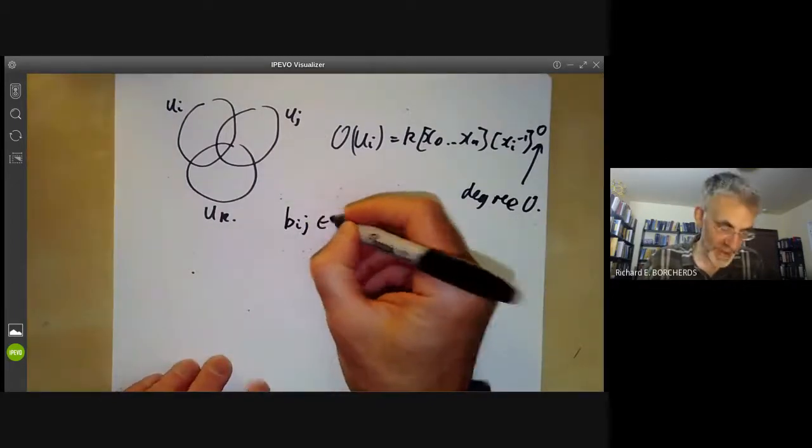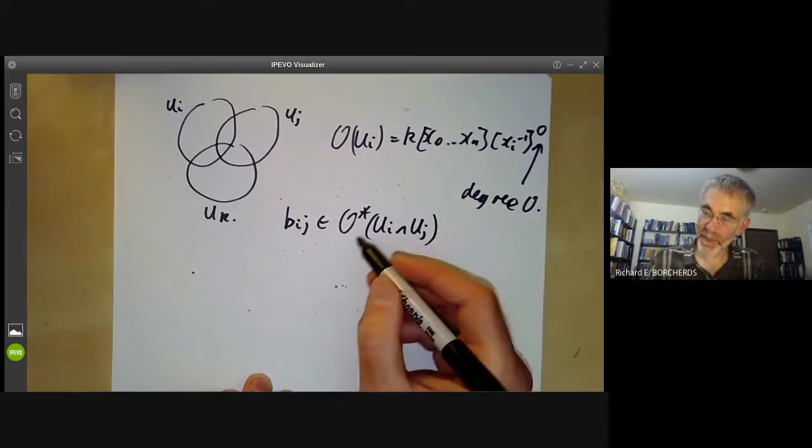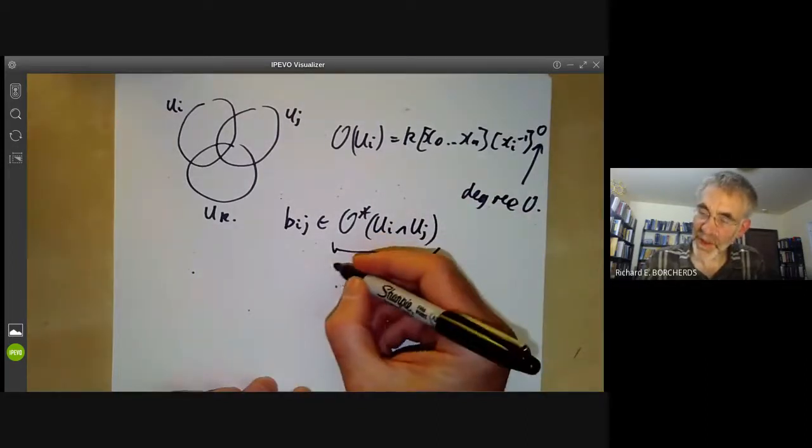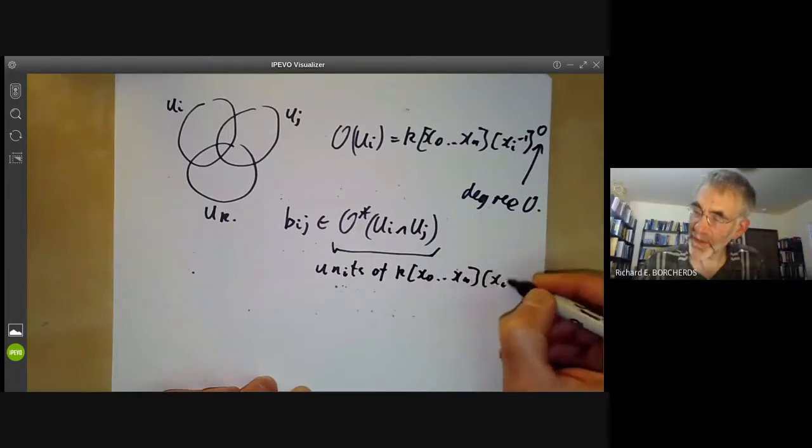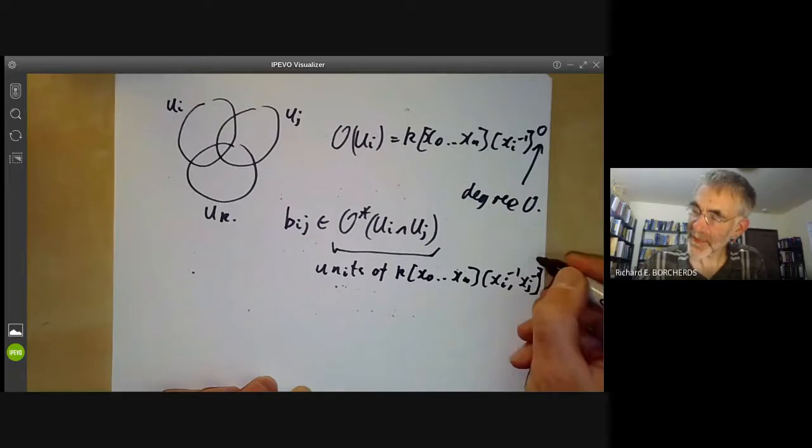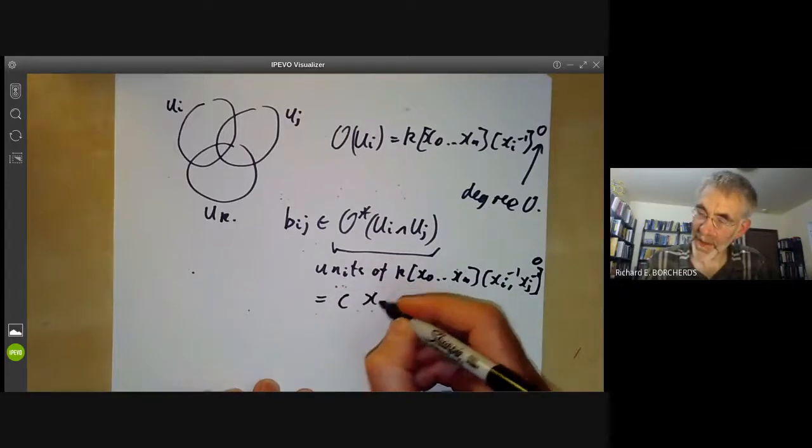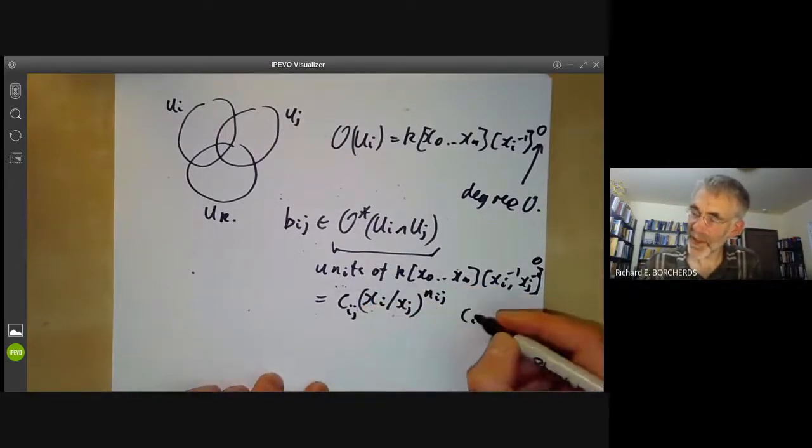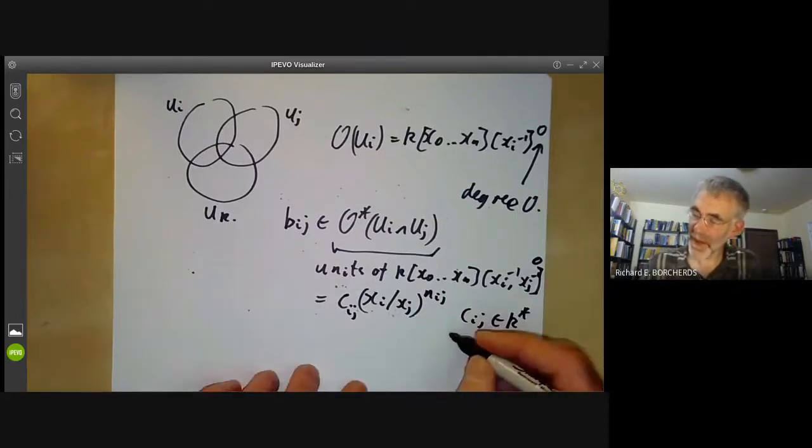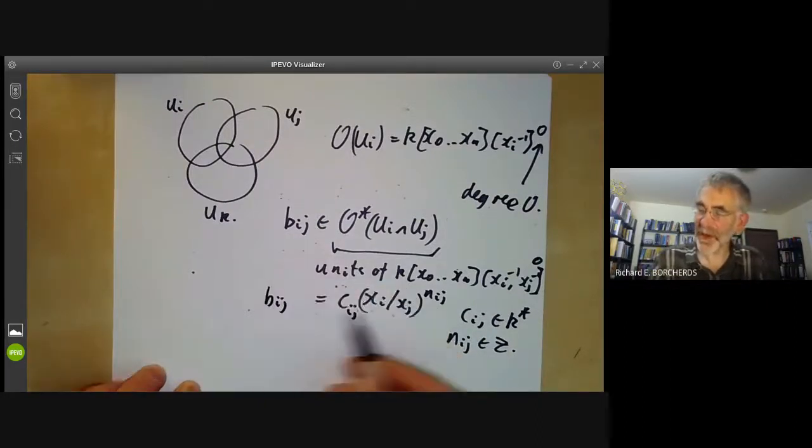This is actually just another polynomial ring, but we're writing it in this form because it makes it easier to go between different coverings. We want the elements B_ij to be in the units of U_i intersection U_j. This is given by the units of K[X_0, ..., X_n] where we invert X_i and X_j and take the degree zero pieces. The units of this are all of the form C times (X_i over X_j) to the N_ij, where C_ij is a non-zero element of our field and N_ij is an integer, because these are the only degree zero units of this ring.